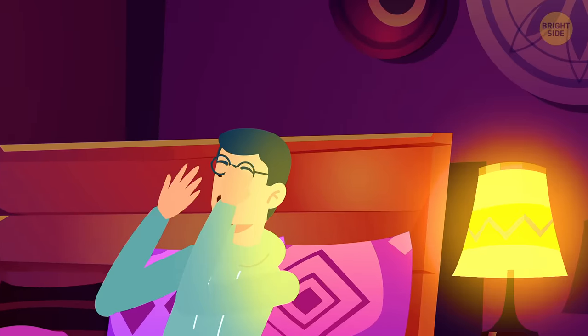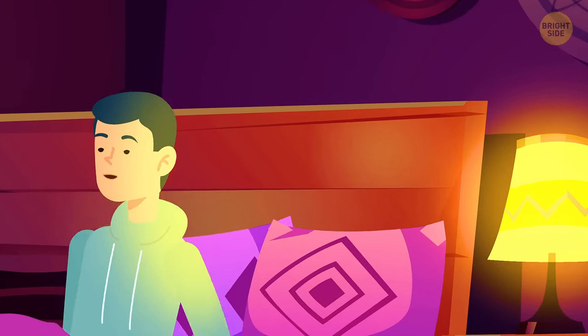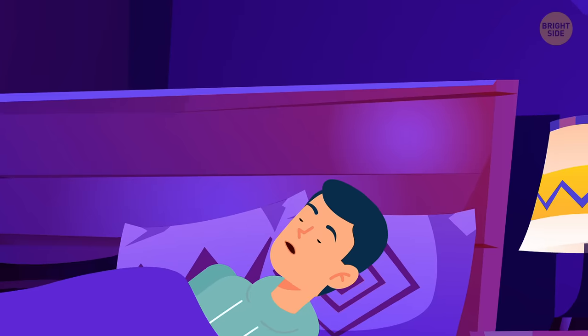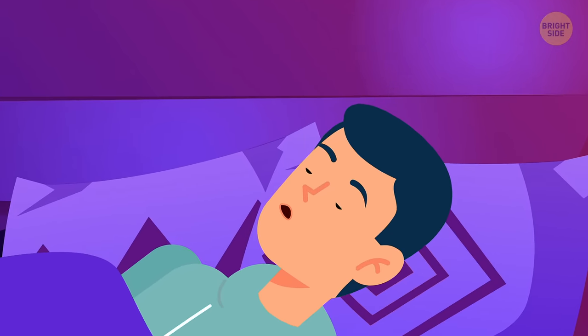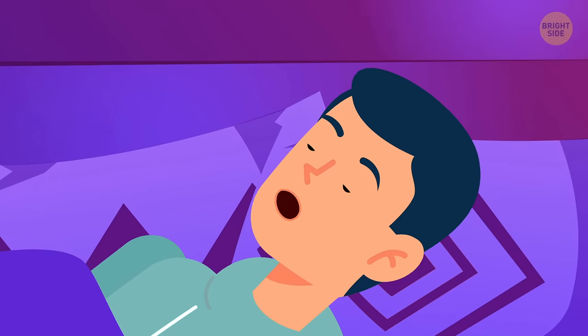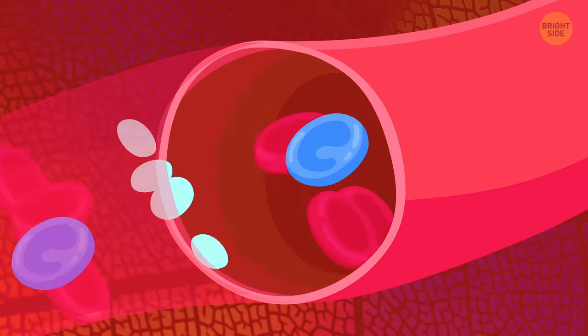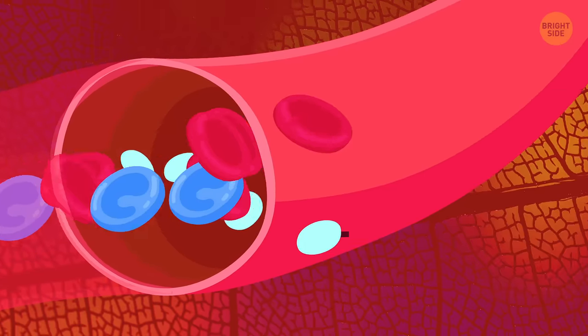To start our journey, we need to get inside a human body. This is Jerry. We'll check out his ticker while he's fast asleep. We get inside through Jerry's mouth. Man, this guy snores loud. Cover your ears. Jerry breathes the air in, and we rush into his lungs.